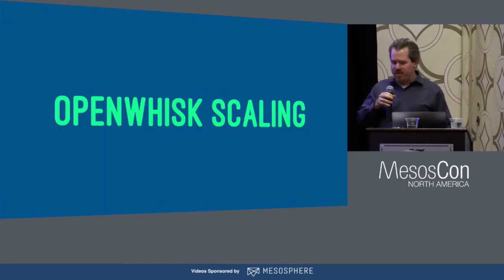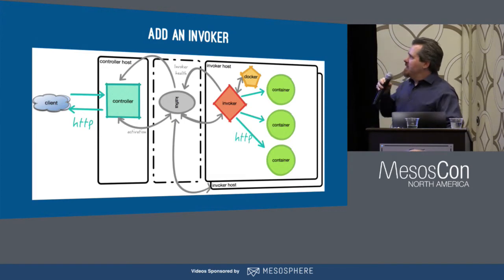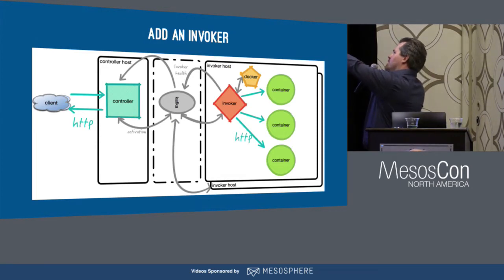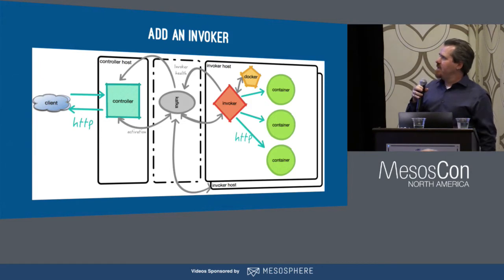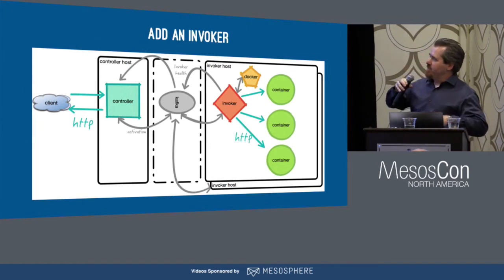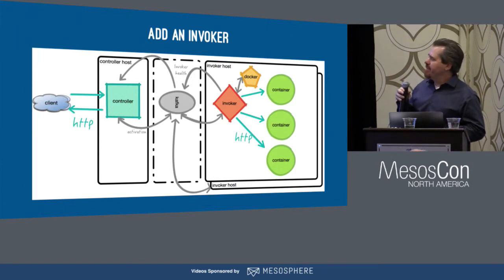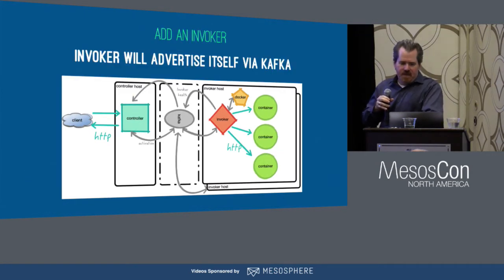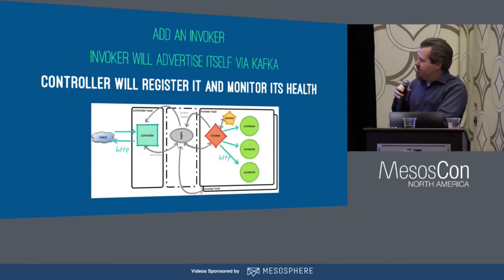Let's talk about OpenWhisk scaling. To add an invoker, the whole invoker host block gets duplicated, another topic on the Kafka broker gets created, and the controller has to manage knowing how many invokers are in the system and what actions have been executed so there can be some optimization on routing. But it's not easy. When you add the invoker, it advertises itself in Kafka, and that's how the controller discovers and monitors its health via Kafka.